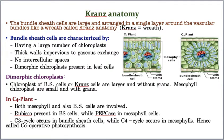Rubisco — the primary carbon dioxide acceptor in the C3 pathway — is located in the bundle sheath cells in C4 plants. Mesophyll cells instead contain PEPCO: phosphoenolpyruvic carboxylase oxygenase, also written as PEP carboxylase. This enzyme plays the key role in the first step of the C4 mechanism.